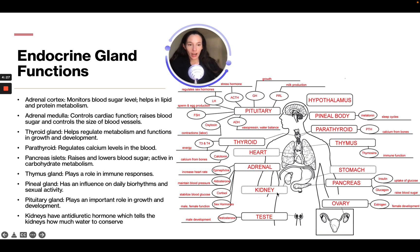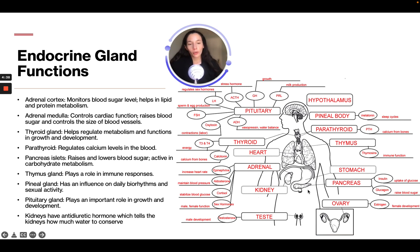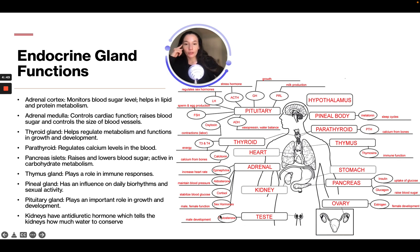You can see there are some other structures on here like the kidneys and stomach — those are not endocrine, which is why their boxes are faded. That's just to show what those structures are so you can understand, for example, that the adrenals are on top of the kidneys. This chart also gives great detail — for example, the testes create testosterone, which is used for male development.